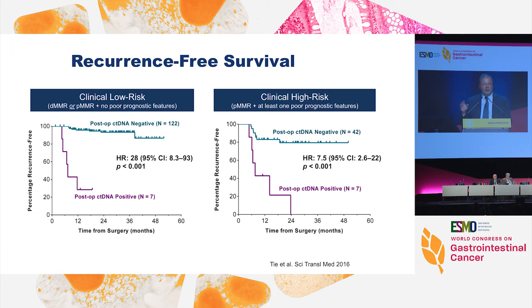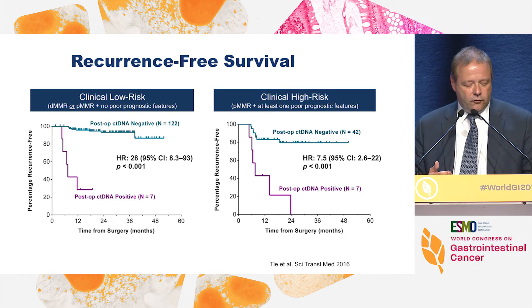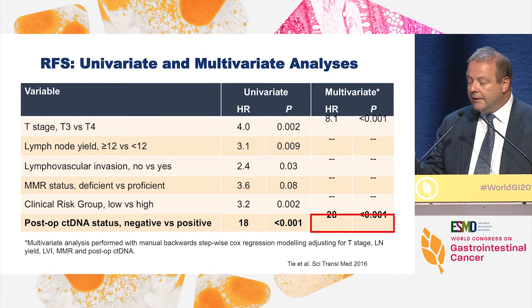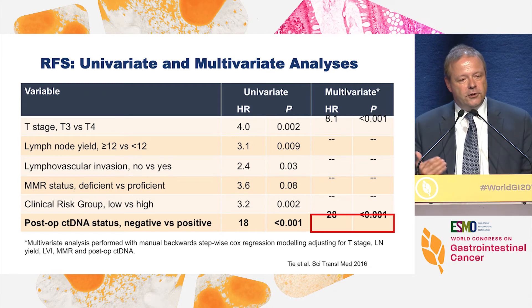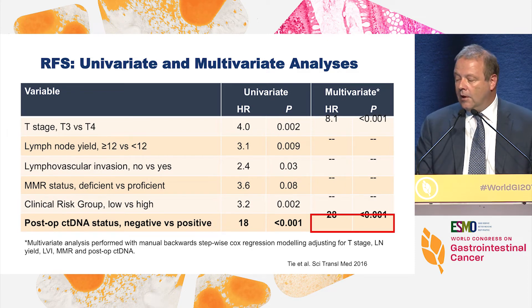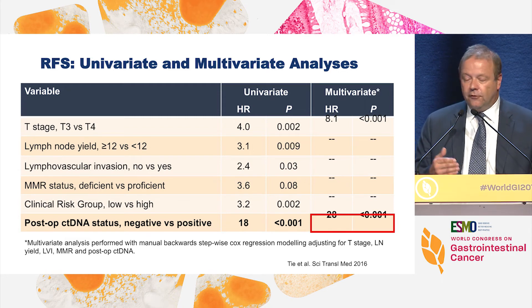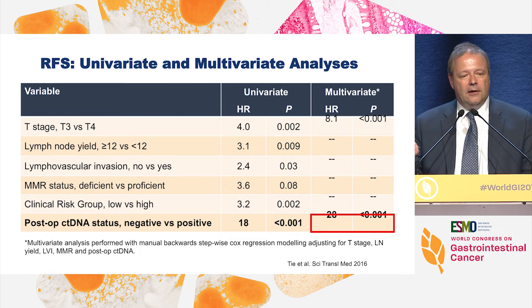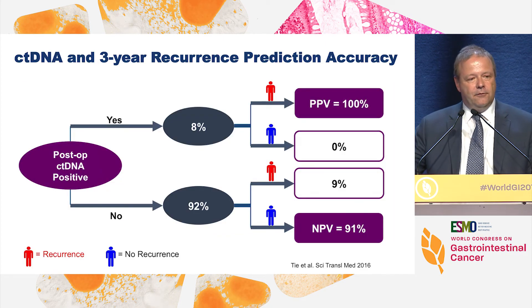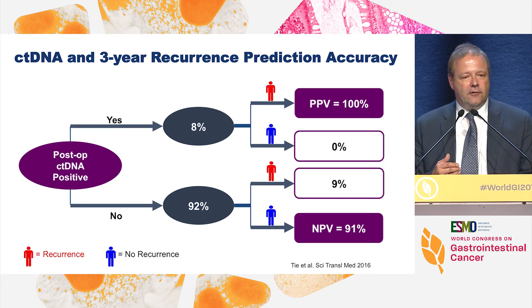Concerningly, even among clinically high-risk patients treated with chemotherapy, every single patient who had circulating tumor DNA positivity recurred — it is a very strong prognostic factor. Only about 10 percent of stage two patients actually had positive circulating tumor DNA after surgery. In multivariate analysis, the presence of post-operative ctDNA status was highly statistically significant, associated with recurrence with a hazard ratio of 28 — probably as strong as it gets.